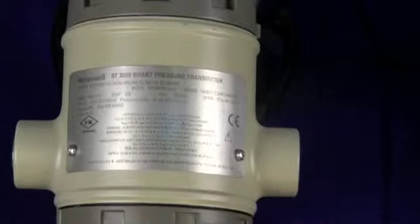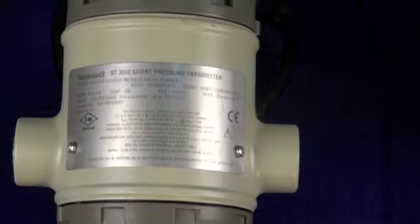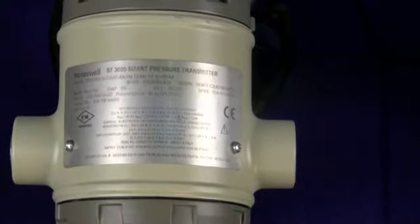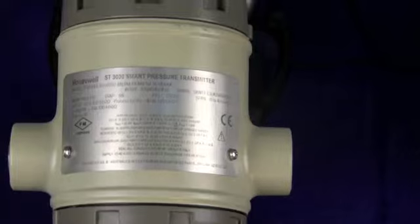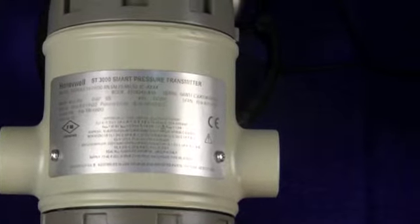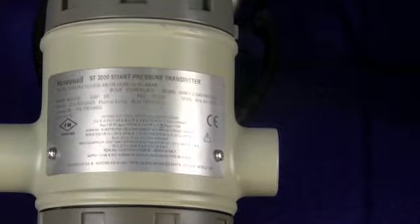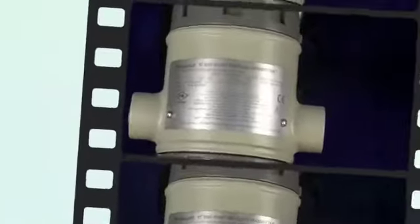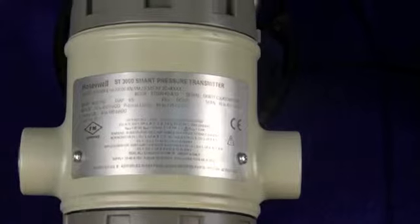Your transmitter is probably not ranged for what the factory calibration is, so if you can also find out what your transmitter is ranged for, what the 4 to 20 milliamp output is ranged for, that would also be very helpful for us in trying to get you a replacement or any parts that you might need. If you're not sure what it's ranged for, ask your instrumentation engineer. He should be able to find that out for you.